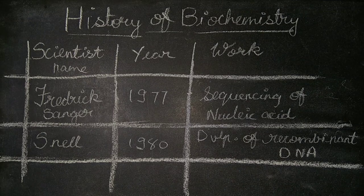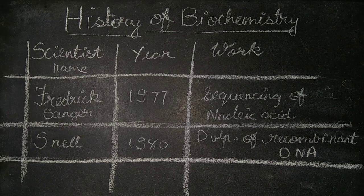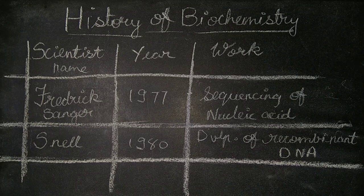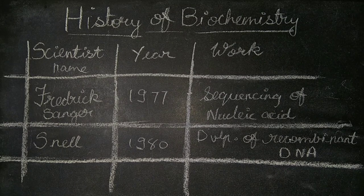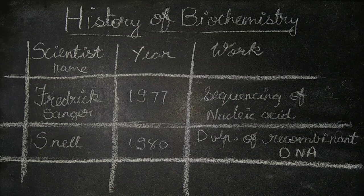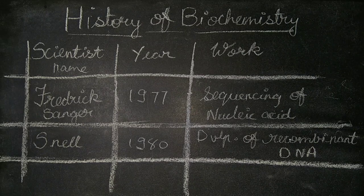Next is again Frederick Sanger in the year 1977, who discovered the sequencing of nucleic acids. Next is Snell in the year 1980, who did the development of recombinant DNA.